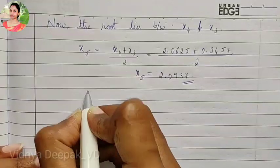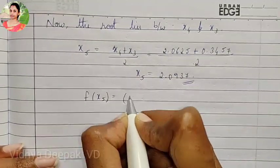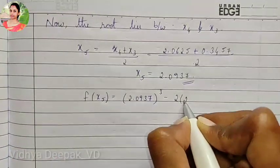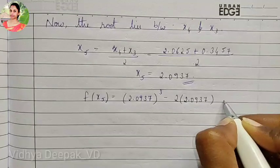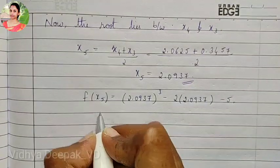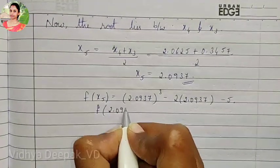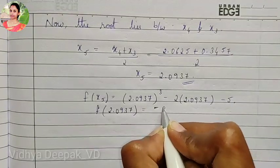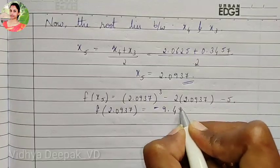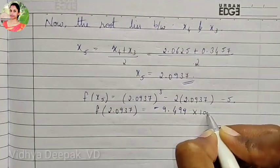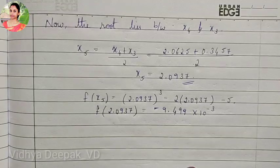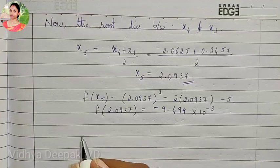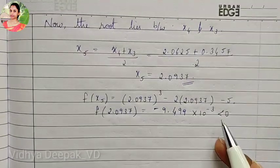After finding x5, we find f of x5: 2.0937 cube minus 2 into 2.0937 minus 5. We get f of 2.0937 equal to minus 9.499 into 10 to the power of minus 3. Use a scientific calculator because there will be more decimal places.